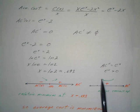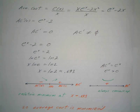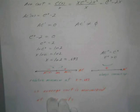Decreasing to increasing, or concave up—either way, I have a relative minimum at x equals 0.693. So the average cost is minimized at 693 units because remember, x is in thousands of units.